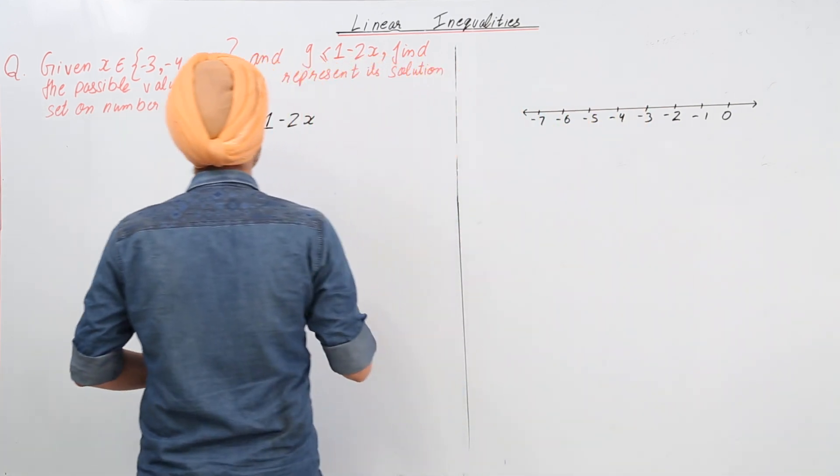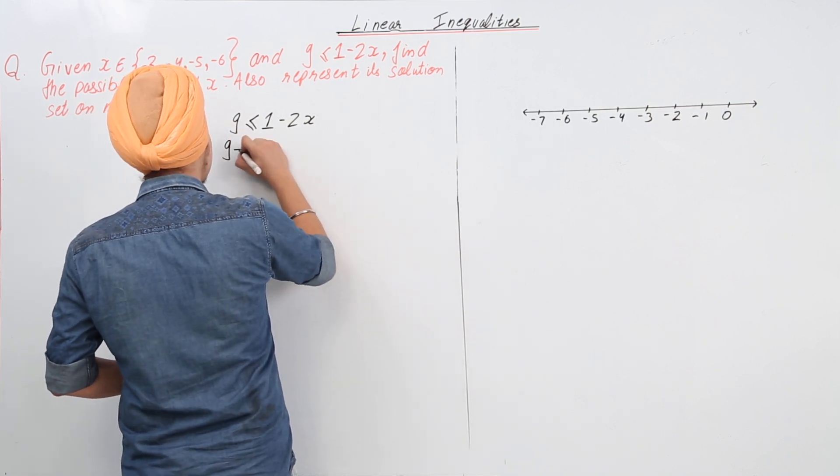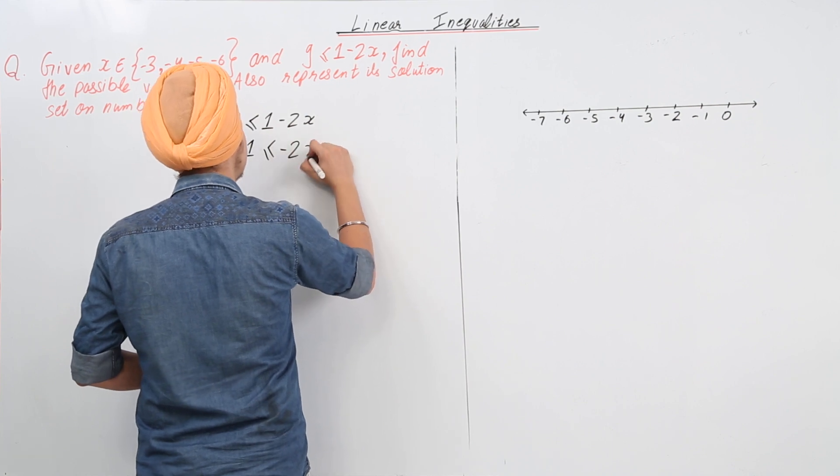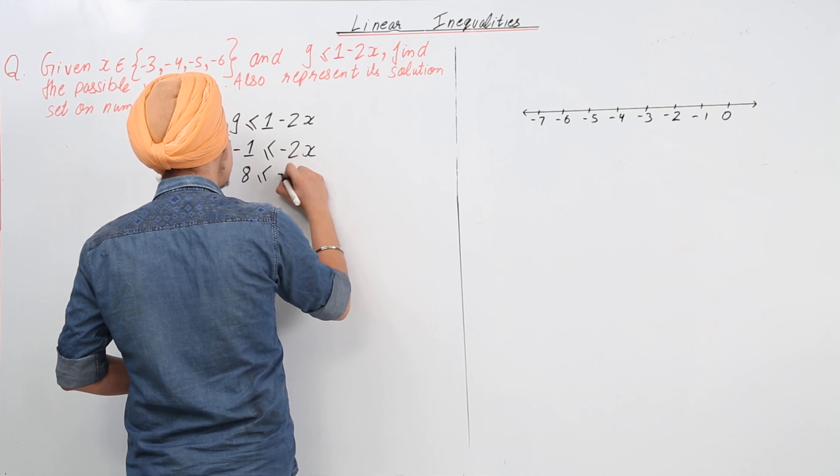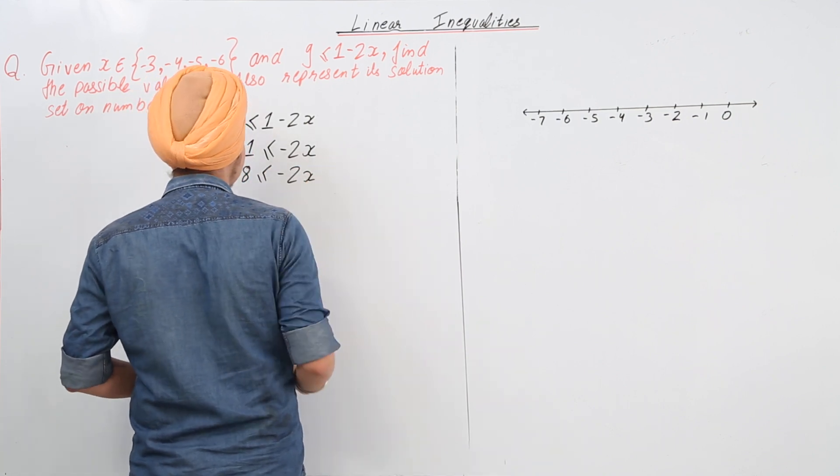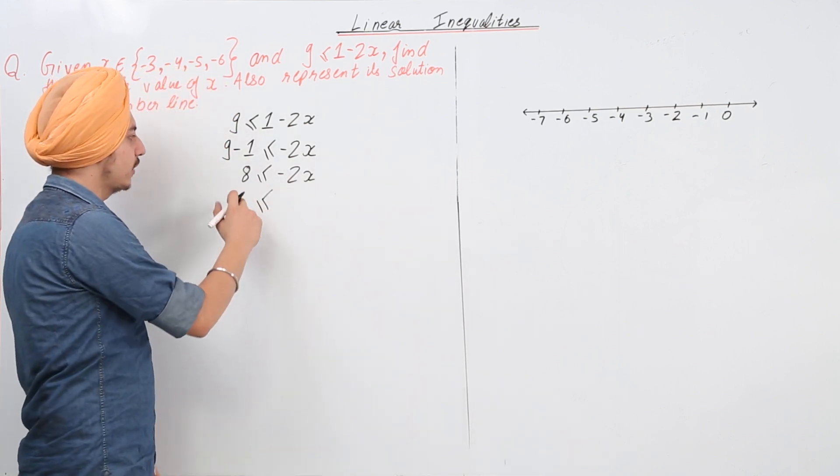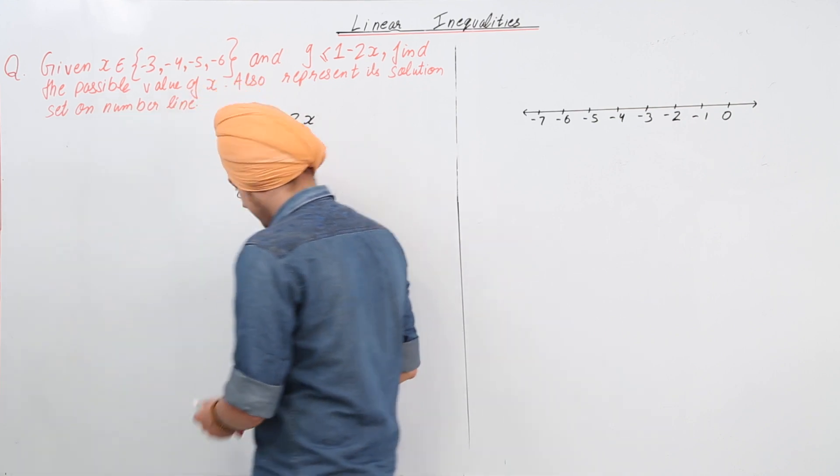So what happens is we take this 1 to this side. So this becomes 9 minus 1 is less than or equal to minus 2x. That is 8 is less than or equal to minus 2x. Then dividing by 2, we have 4 is less than or equal to minus x.